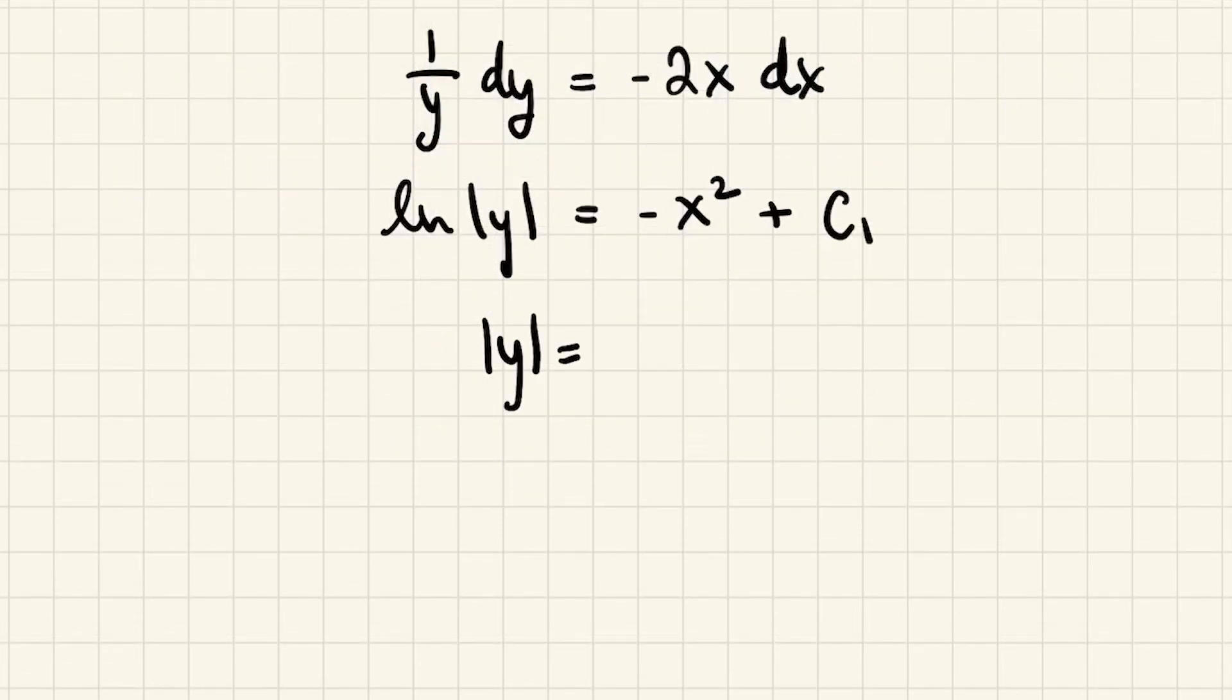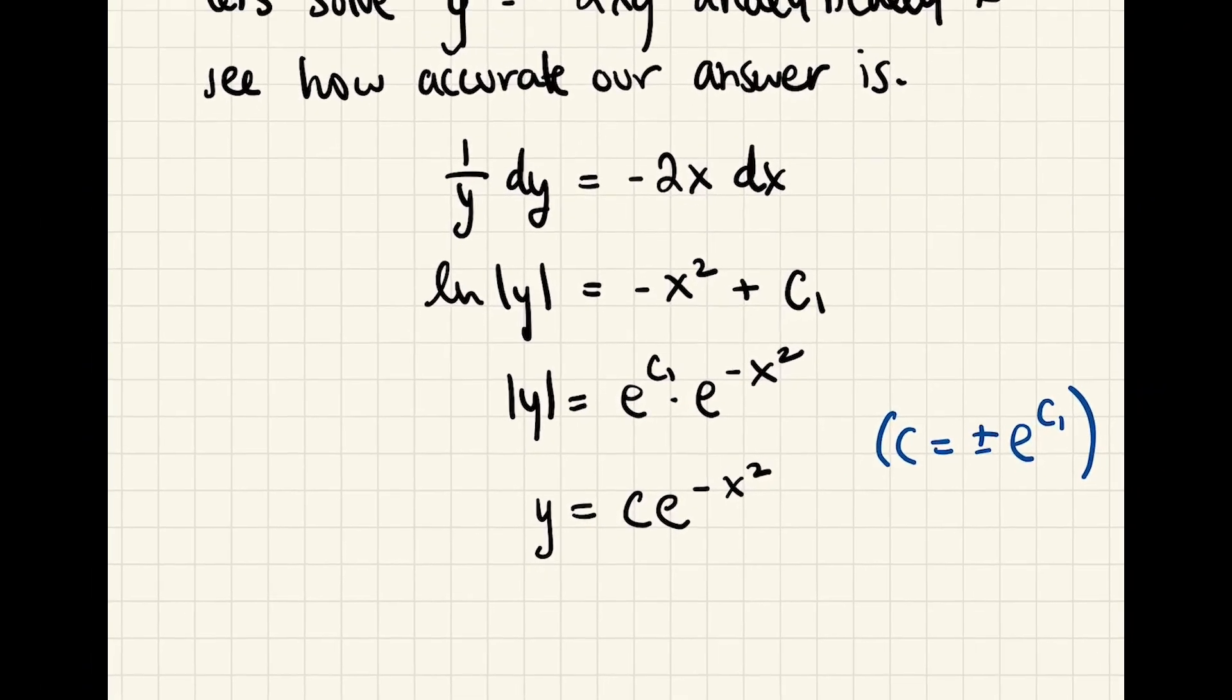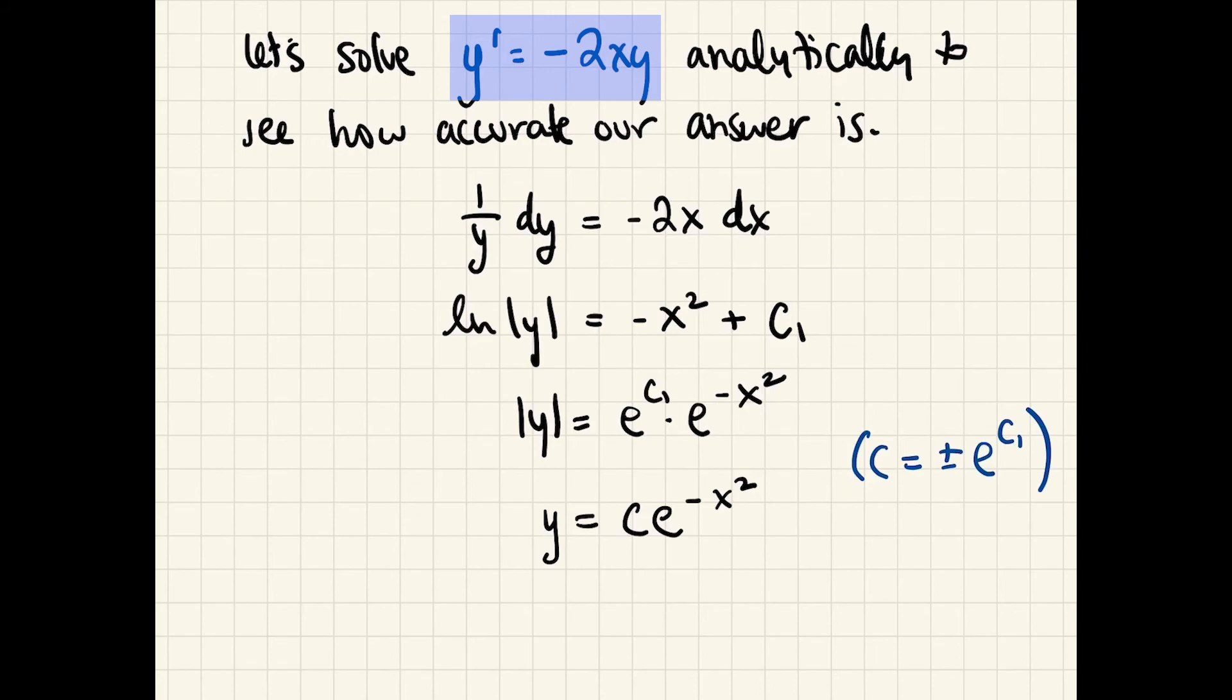So |y| = e^C · e^(-x²). So we could say y = Ce^(-x²), where that new constant is ±e to the original constant. Also note that y = 0 is a solution, but it's not a singular solution, because we can simply let c = 0 to obtain that solution.